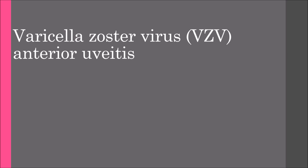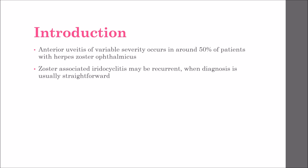The next virus we are going to discuss is the varicella zoster virus and the anterior uveitis caused by it. Anterior uveitis of variable severity occurs in about 50% of patients with herpes zoster ophthalmicus, and generally starts 1–2 weeks after the acute skin rash.